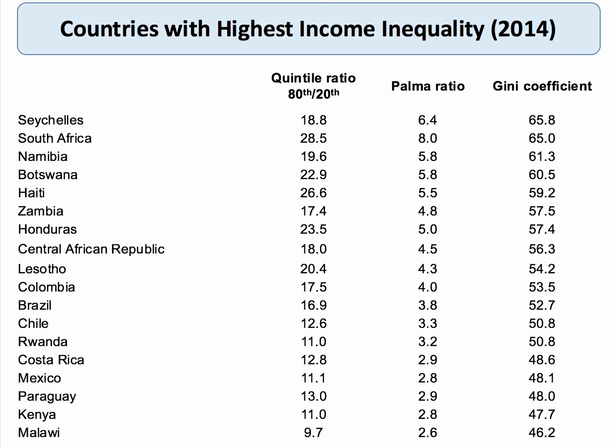The highest Palma ratio measure is again South Africa, with a measure of 8 — meaning the top 10% of households earn 8 times more than the income of the bottom 40%. Little wonder that South Africa, by most of these measures, is the country with the highest inequality in the world. Remember the quintile ratio for the UK was 5 for disposable income — these countries clearly have hugely bigger income inequality.